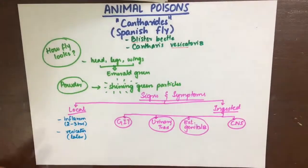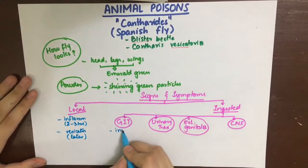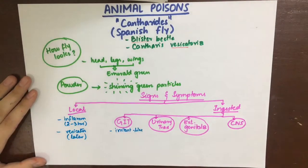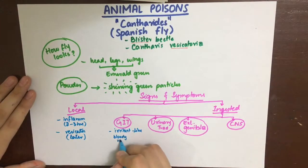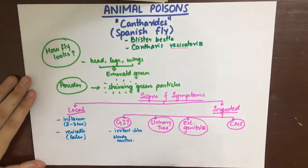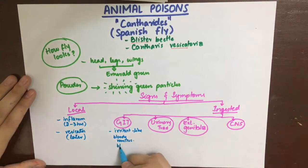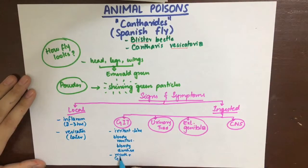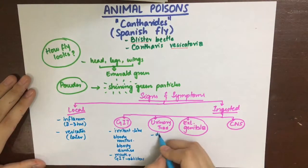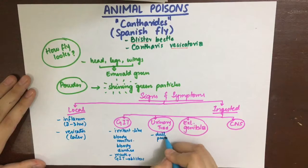The GIT symptoms are the same as an irritant or corrosive poison: burning sensation in the mouth, throat, esophagus, stomach and abdomen, followed by intense thirst, difficulty swallowing, speech difficulty, nausea, vomiting of blood-stained material, and diarrhea with blood and mucus. The mouth and GIT also develop severe blisters.